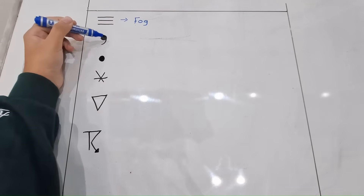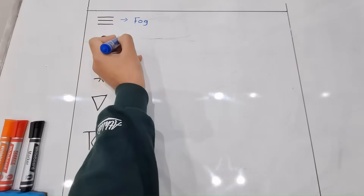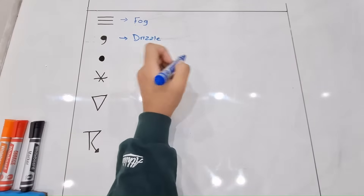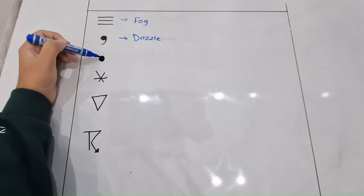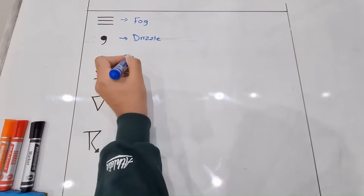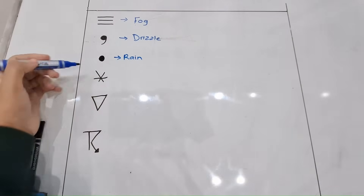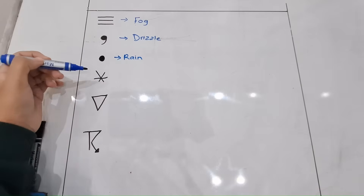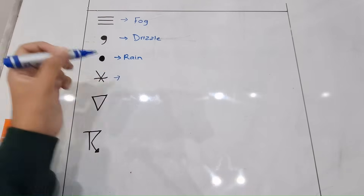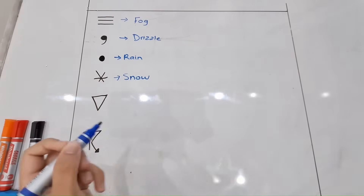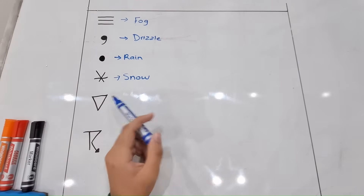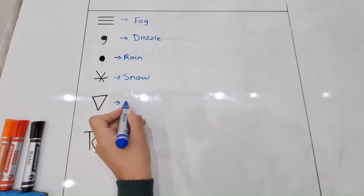The next symbol kind of looks like an inverted comma, and this indicates drizzle — which is light rain. The next symbol is a dot, which indicates rain, as we know from our previous example. Then we can see a symbol that looks like a snowflake, which indicates snow. The next symbol indicates showers, which is basically heavy rain.